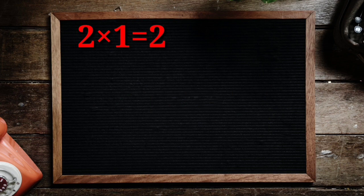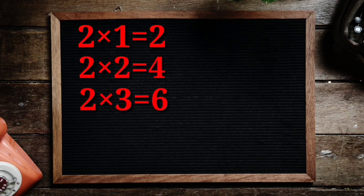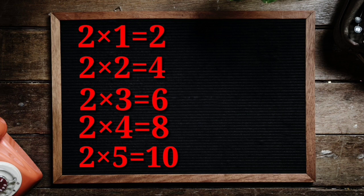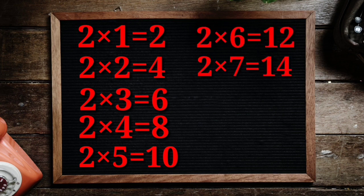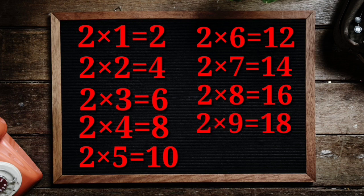2 1's are 2, 2 2's are 4, 2 3's are 6, 2 4's are 8, 2 5's are 10, 2 6's are 12, 2 7's are 14, 2 8's are 16, 2 9's are 18, 2 10's are 20.